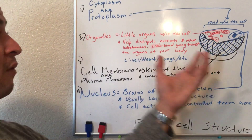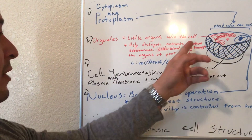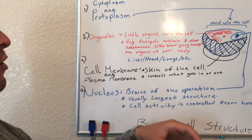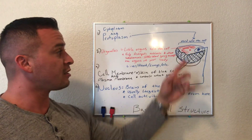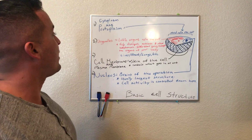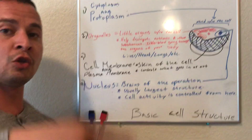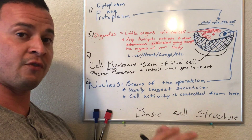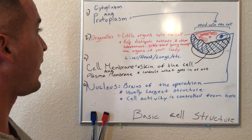Your organelles are floating around in the cytoplasm within the cell. The organelles are like little tiny organs — just like your heart, your lungs, and your liver — and they make sure that the cell stays alive, just like the organs in your body keep you alive. They help distribute nutrients and other substances. Think of it as like the blood flowing through your body, through your vessels and organs, taking nutrients and distributing them to wherever they need to go so you can stay alive.